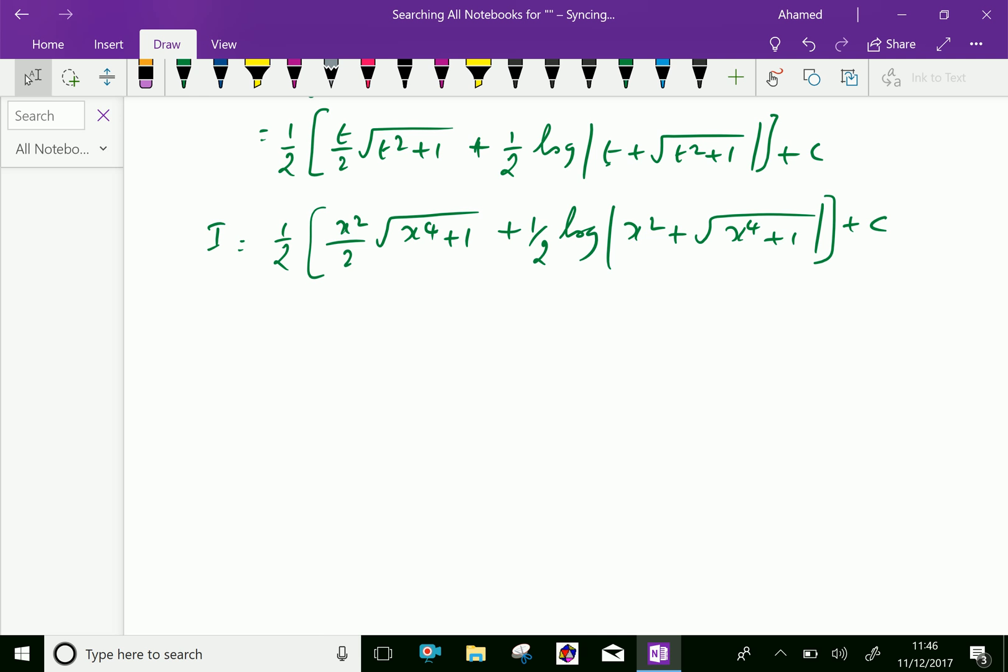Give one-half inside. We will get one-half into one-half is one by 4, x squared times square root of x to the power 4 plus 1, plus one-half into one-half is one by 4, log of x squared plus square root of x to the power 4 plus 1, plus c.